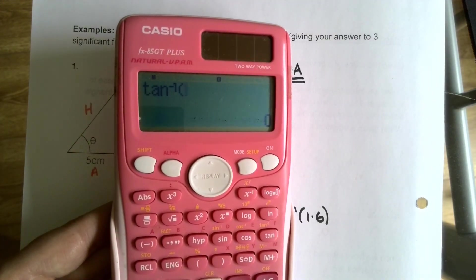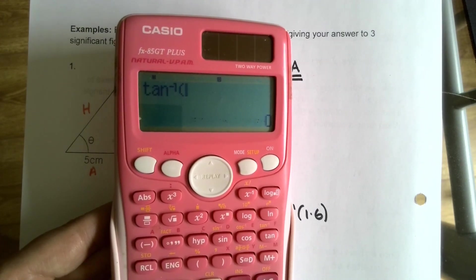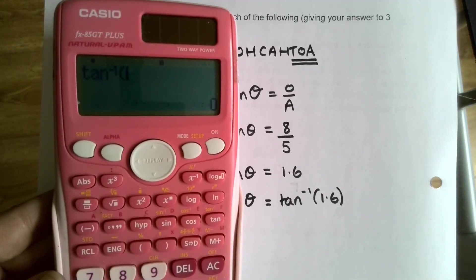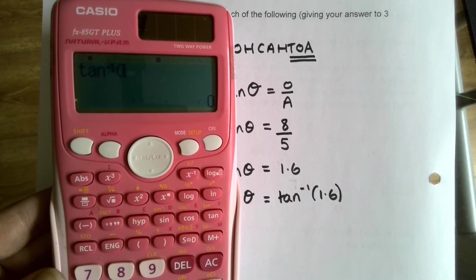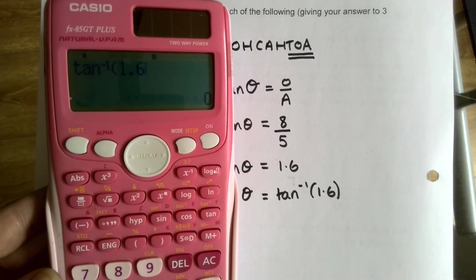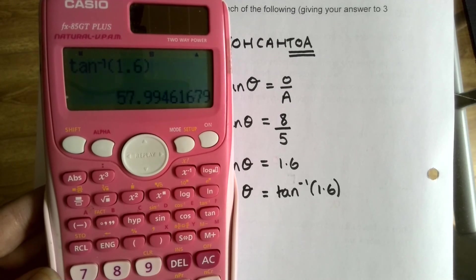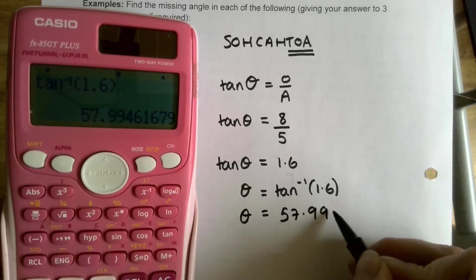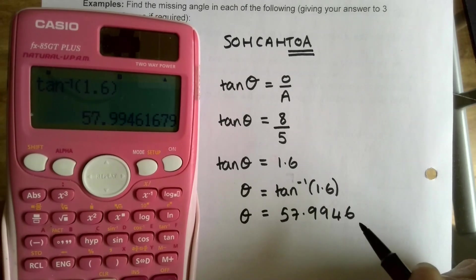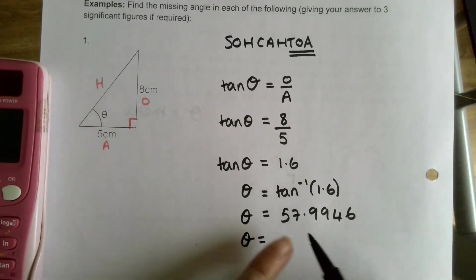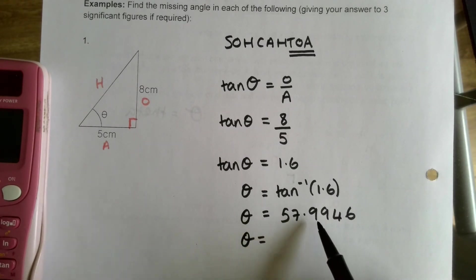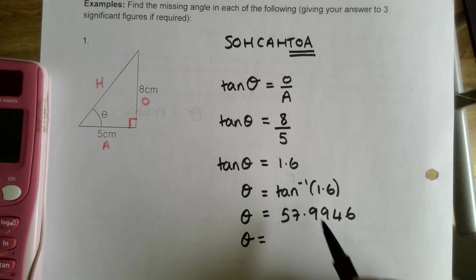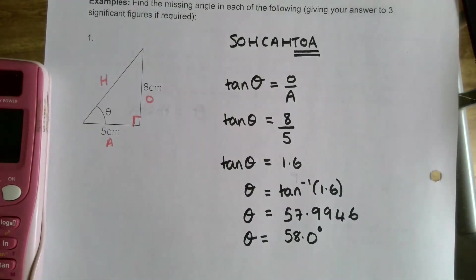People with Sharp calculators - hopefully yours puts in the bracket too; if not, just add it manually. So tan⁻¹(1.6) gives us 57.9946. The question asked for three significant figures - 5, 7, 9 are the first three significant figures, the next digit is above 5, so it rounds up. The answer is 58.0 degrees.